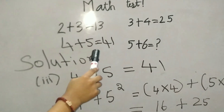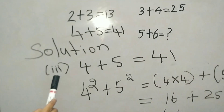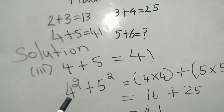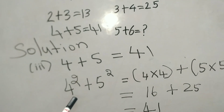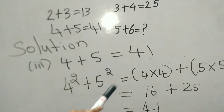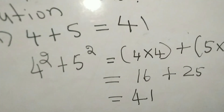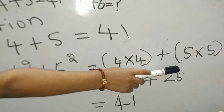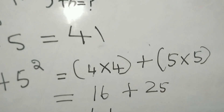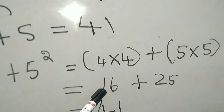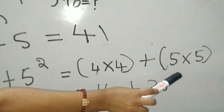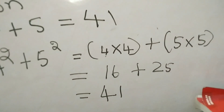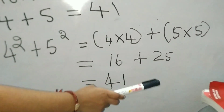Let's solve this one. The third question: 4 plus 5 equal to 41. 4 turned into 4 squared. 5 turned into 5 squared. 4 squared means 4 into 4, which is 16. 5 squared means 5 into 5, which is 25. 16 plus 25 equal to 41.